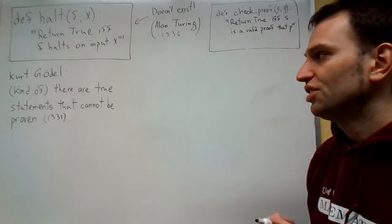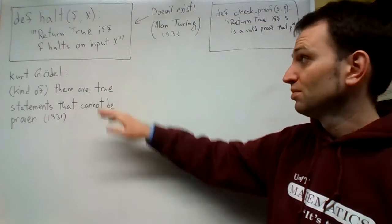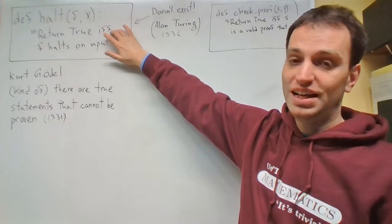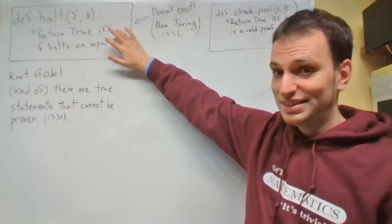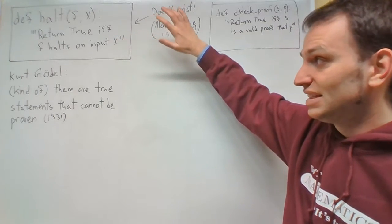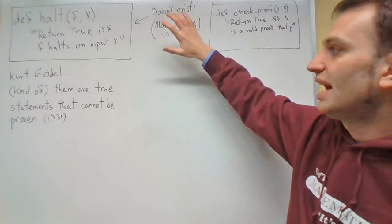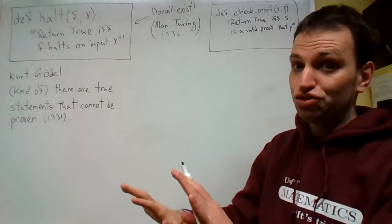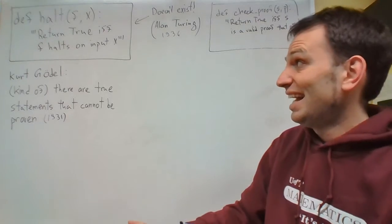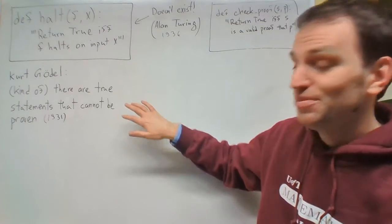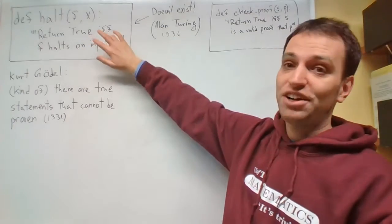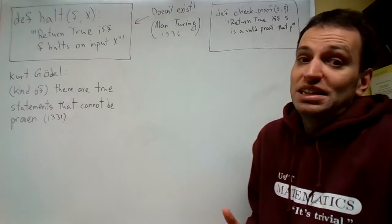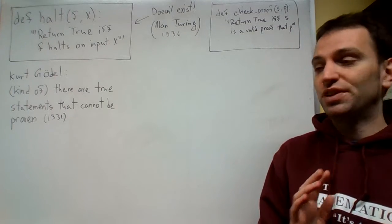Here is our strategy. We've already proven that the halt function is impossible. Now let's assume that's false — let's assume that any statement that is true can also be proven. If we assume that, we can actually write HALT. But we cannot write HALT, so that means there are statements that cannot be proven. That's our strategy.